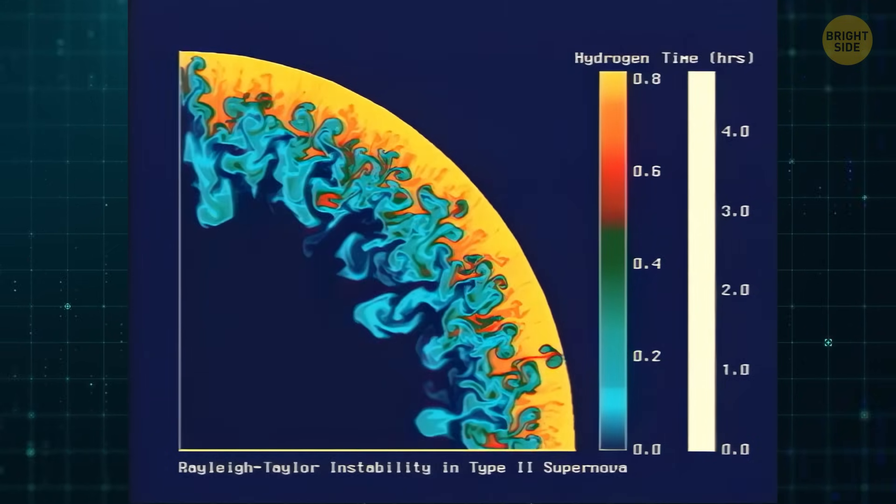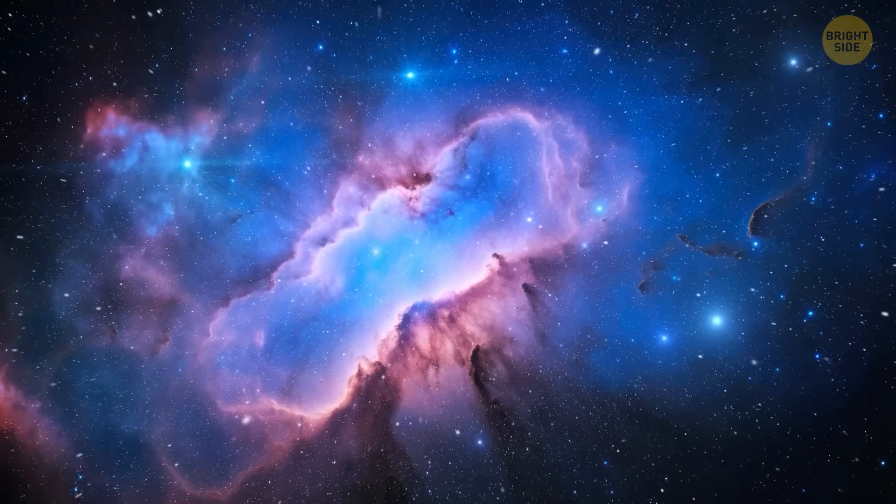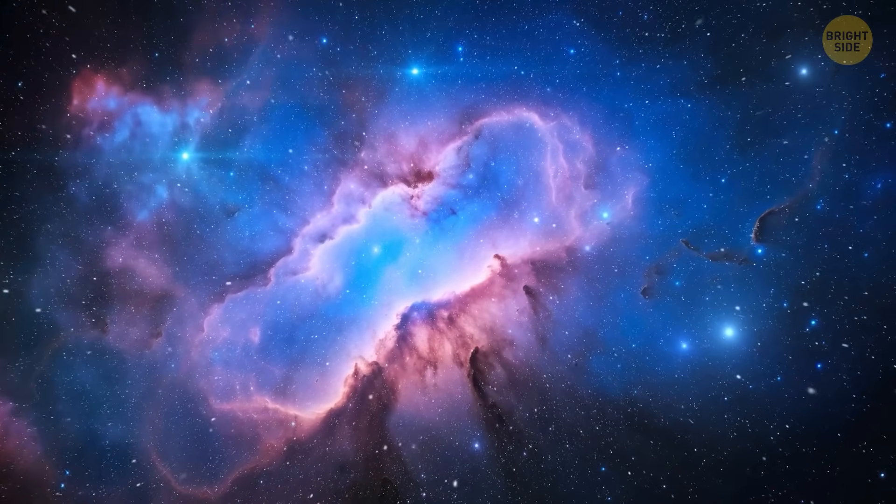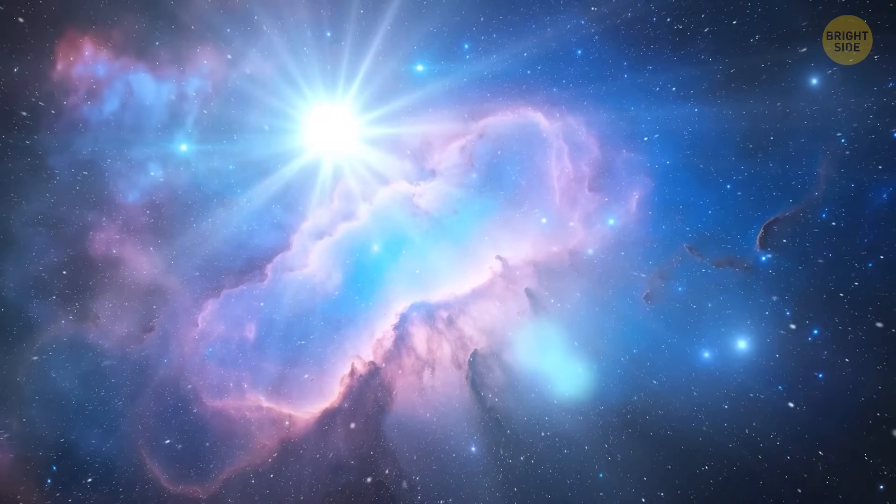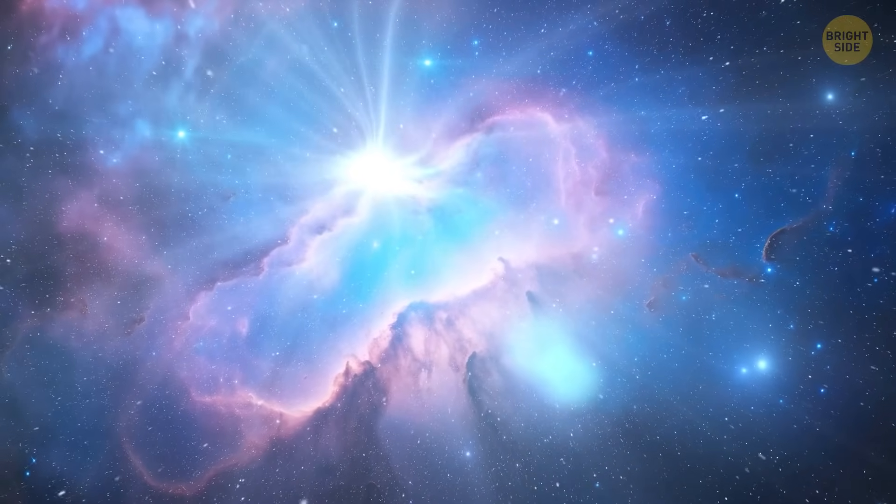Unlike atomic hydrogen, which emits light, ionized hydrogen does not. Instead, it absorbs light, which means it can only be observed when it passes in front of a bright background source.